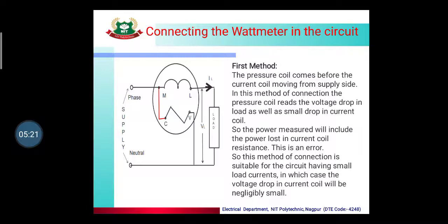In this method, the pressure coil reads the voltage drop across the load as well as the small voltage drop across the current coil. Therefore, the power measured will include the power lost in the current coil resistance. This method is suitable for circuits having small load current, where the voltage drop in the current coil will be negligibly small.